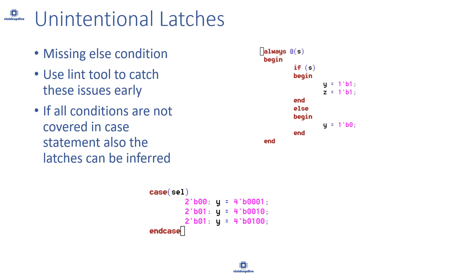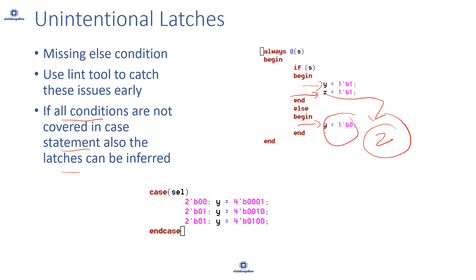As we saw in Verilog, if you have else statements that are not complete, that can also lead to unintentional latches. For example, in an if block you assign values to both Y and Z, but in the else block you only assign a value to Y — that causes Z to become a latch. If all conditions are not covered, latches can be inferred in the design. Following the rule that all else statements must include all elements from the if statement can avoid unintentional latches.